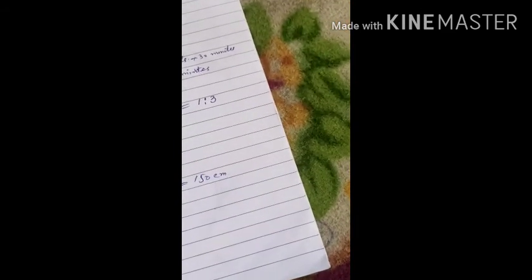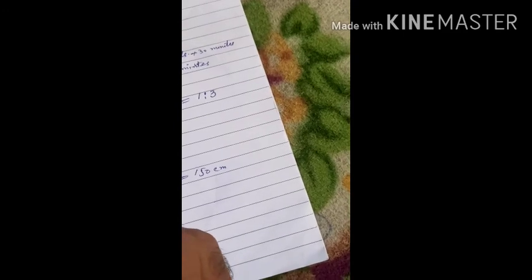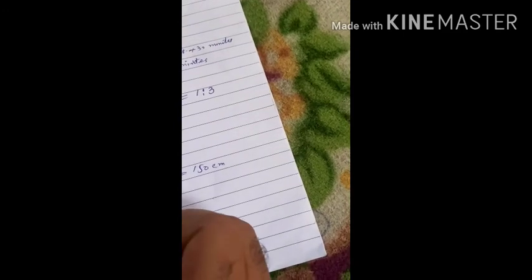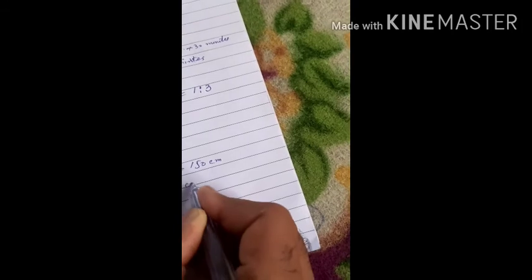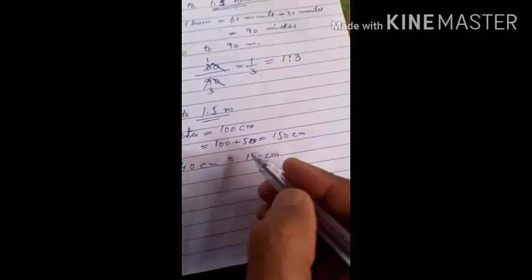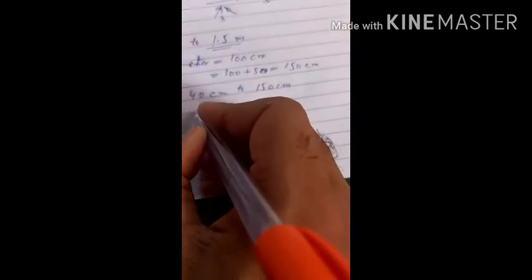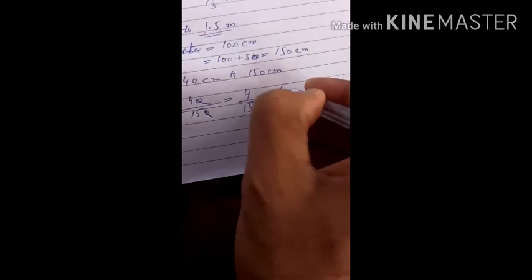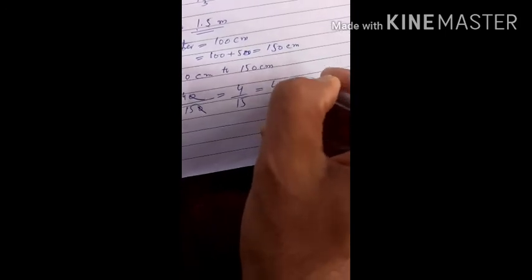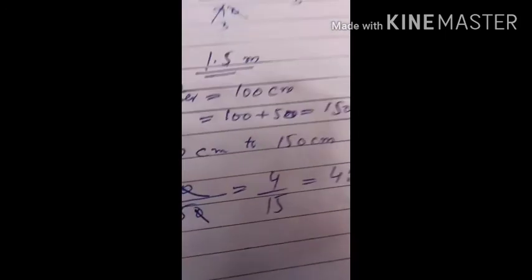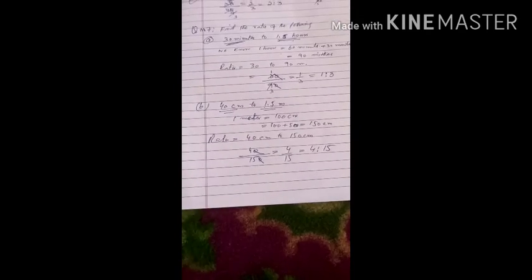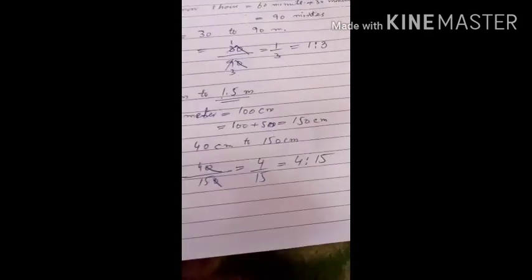So the ratio will be 40 centimeters to 150 centimeters, since we converted to centimeters. The ratio is 40 divided by 150, cancel the zeros, giving 4 divided by 15, which is 4 is to 15. This is our answer, 4 is to 15.